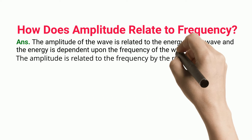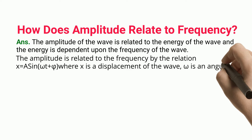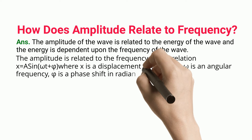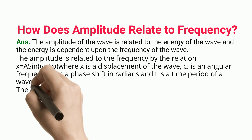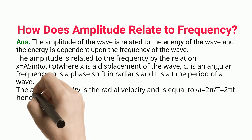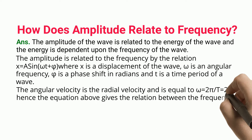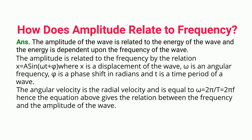The amplitude is related to the frequency by the relation X equals A sin(ωt + φ), where X is the displacement of the wave, ω is the angular frequency, φ is the phase shift in radians, and T is the time period of the wave. The angular velocity is the radial velocity and is equal to ω equals 2π/T equals 2πf, hence this equation gives the relation between the frequency and the amplitude of the wave.